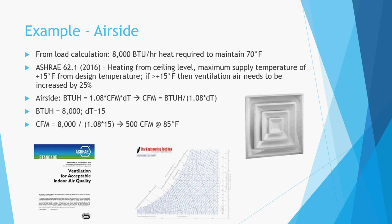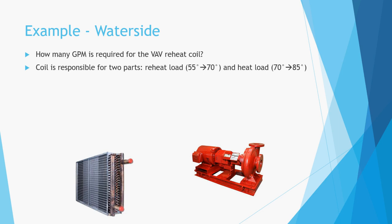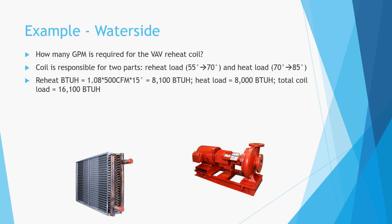Now let's determine how much water flow we need at the VAV reheat coil to heat the air up to 85 degrees. The VAV coil is responsible for two parts. The first is the reheat load — heating the air from the 55-degree supply up to the room set point of 70 degrees. The second part is the actual room heat load from the load calculation. Using 500 CFM and a 15-degree delta T corresponding to heating the air from 55 to 70 degrees, the reheat load calculates to 8,100 BTUs per hour. Combined with the 8,000 BTU room load, the total load the VAV coil needs to handle is 16,100 BTUs per hour.